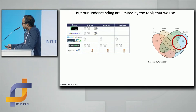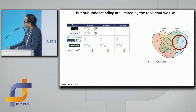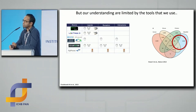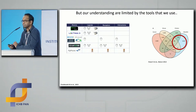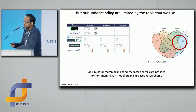If we use these mammalian tools, we will see genes that are common with humans and mice, but we will be ignoring genes that are only in zebrafish and have no orthologues in humans or mice. If somebody says they're interested in studying zebrafish regeneration but they're only looking at genes which are in humans and mice, are they really trying to understand zebrafish regeneration? Maybe it is some of the genes only in zebrafish that make them more pro-regenerative. The tools built for mammalian ligand-receptor analysis are not ideal for researchers like us.